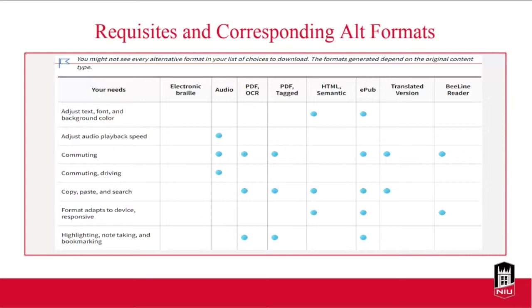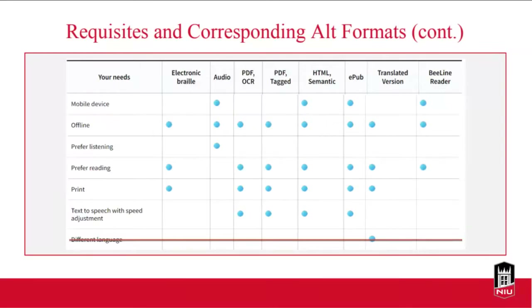The translation feature may eventually be toggleable for individual courses — for example, a foreign language course where students' assignment is to translate something. That's why we don't have it turned on yet. Perhaps down the line we'll be able to turn it on for specific courses, with Beeline Reader as another available format. The translated version remains crossed off since we don't have it enabled.